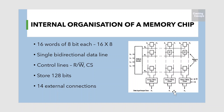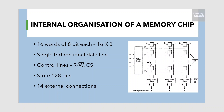Given here is an example of a very small memory chip consisting of 16 words of 8 bits each. This is referred to as a 16×8 organization. The data input and data output of each sense/write circuit are connected to a single bi-directional data line that can be connected to the data bus of a computer. Two control lines, R/W and CS, are also provided in addition to address and data lines. The read/write input specifies the required operation and the CS control line selects a given chip in a multi-chip memory system.